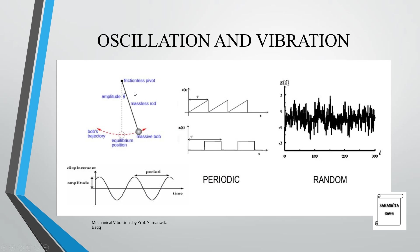Looking at the figures: oscillation is shown using a frictionless pivot with a massless rod and a bob. The equilibrium position is at the center and the bob moves along a trajectory from right to left — a to-and-fro motion. Because the angle theta is very small, this is called oscillation.